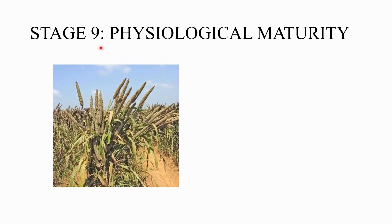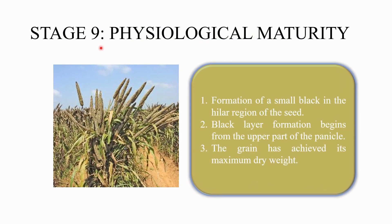The final stage, stage 9, is physiological maturity. The grains have achieved maximum dry weight. A key indicator is the formation of a black layer beginning from the upper part of the panicle, with small black formations visible in the higher regions of the seeds. This black layer formation is the character indicating that pearl millet has reached physiological maturity.